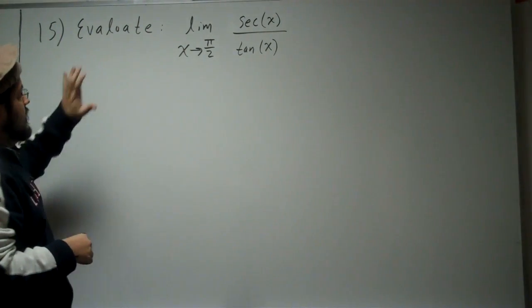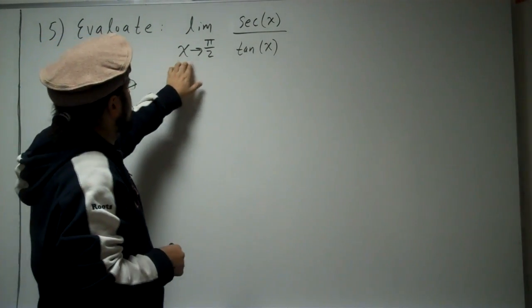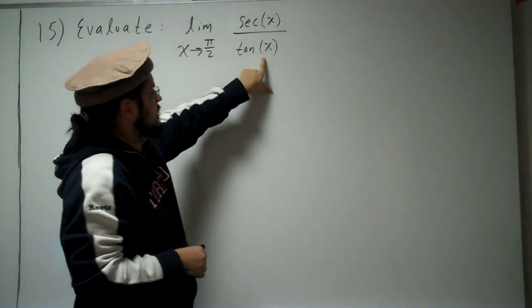We're working with problem 15. Problem 15 says evaluate this limit: the limit as x approaches pi over 2 of secant x divided by tangent of x.